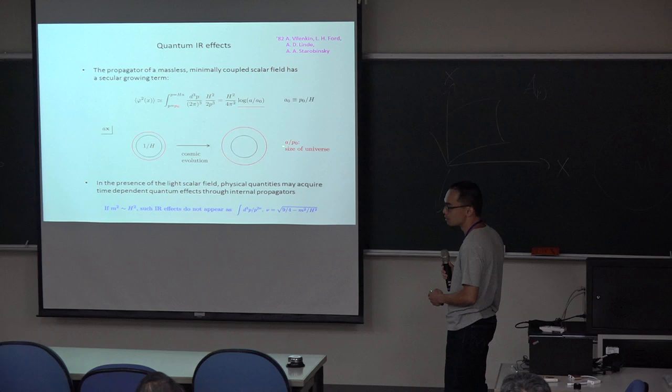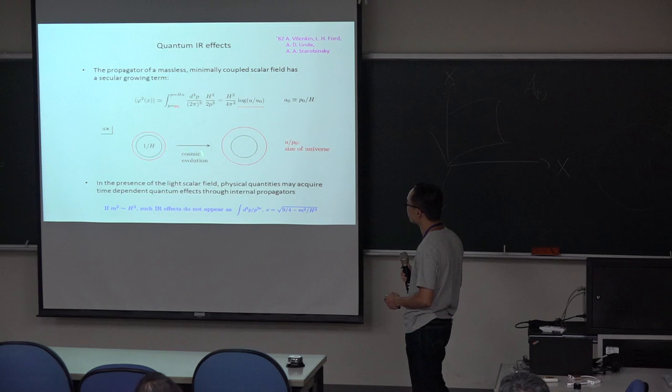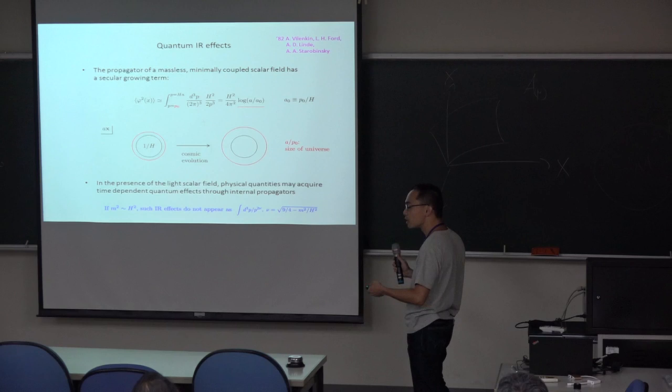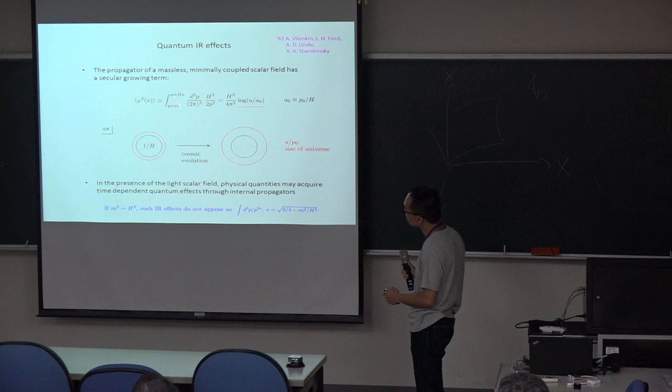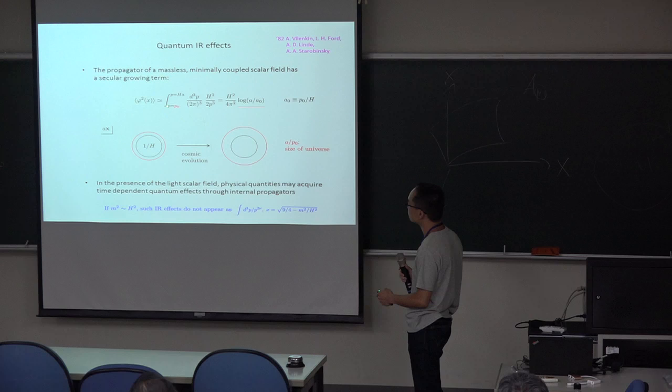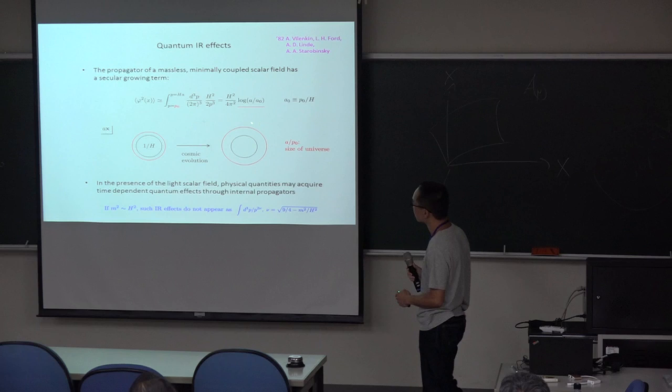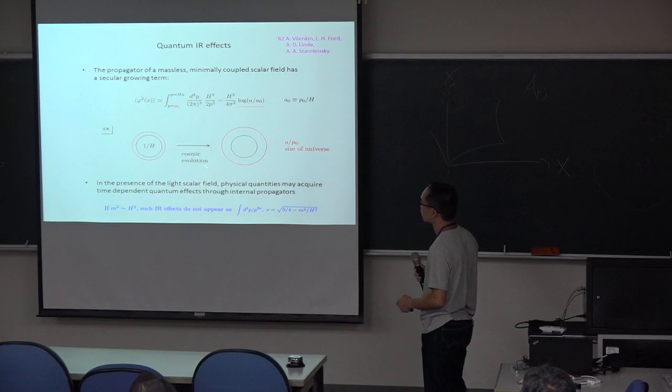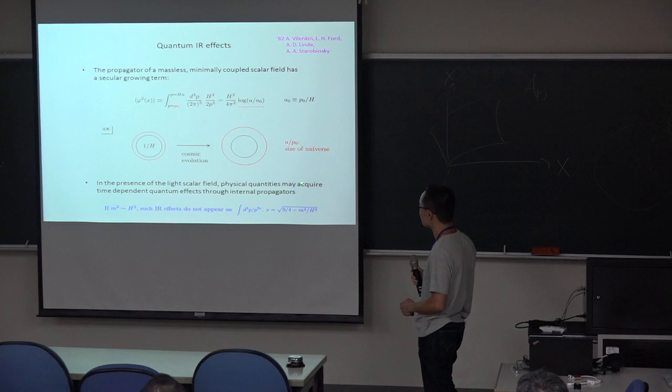Since the upper scale is just constant with the cosmic evolution, on the other hand, the size of the universe is expanding with the scale factor. Then with the cosmic evolution, the outside of the horizon becomes wider and wider. The fact means that the momentum interval also becomes wider and wider. And this kind of increase of the degree of freedom and the existence of the scale invariant spectra leads to time-dependent quantum corrections.